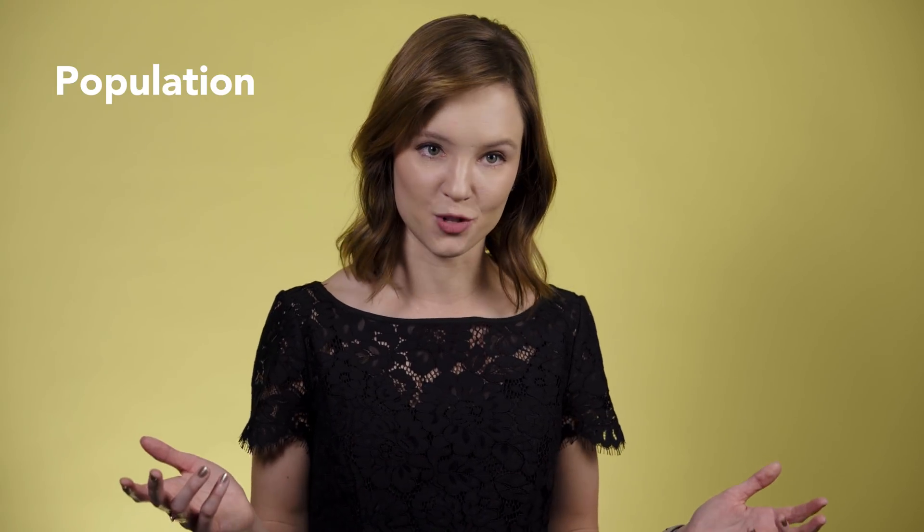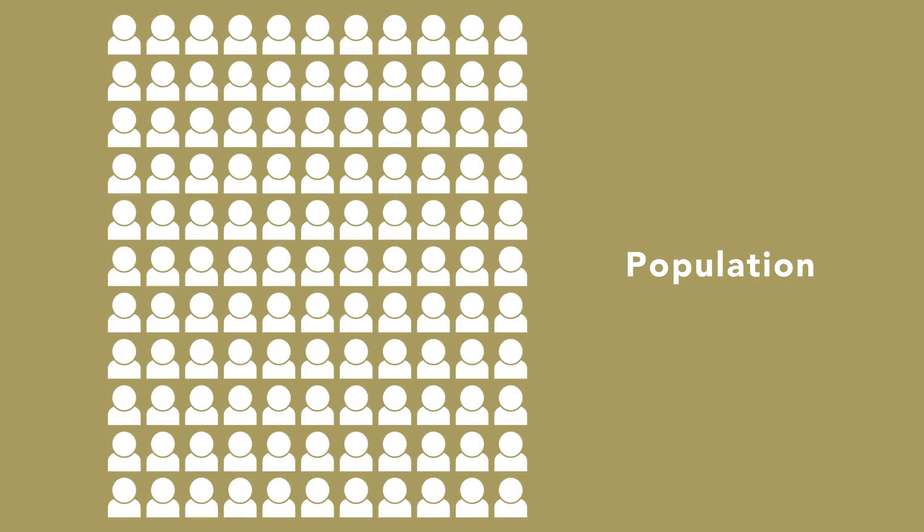Let's say I'm running a quantitative usability test, and I want to know how long on average it takes my population to complete a checkout process. We can think of the big group of people — the entirety of our users — as the population. When we're collecting numerical data, we can't usually collect that data from every single one of our users. So my population value, the average time on task for the entire group of users, is unknown.